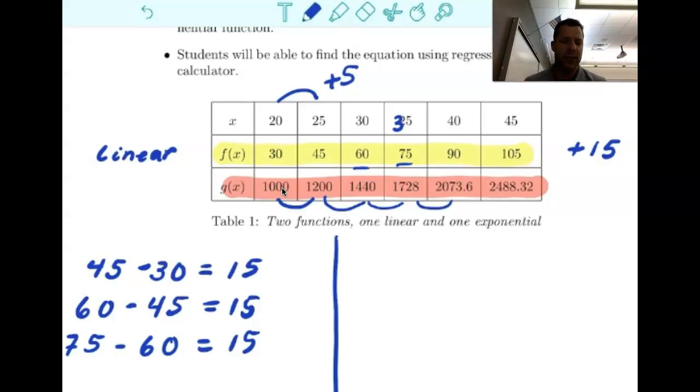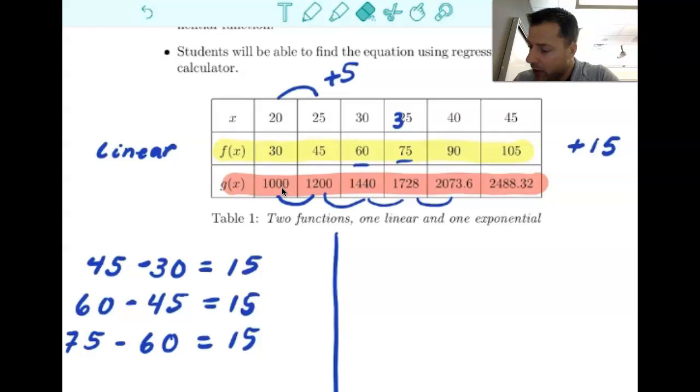Taking consecutive differences like that are great for polynomials of like first degree, second degree, third degree, fourth degree. But what happens if we deal with this idea of exponential functions? So here's what we can do. Instead of looking at the differences, we're going to look at ratios. So if we look at ratios, that's our key, ratios, fractions. So here's what I mean.